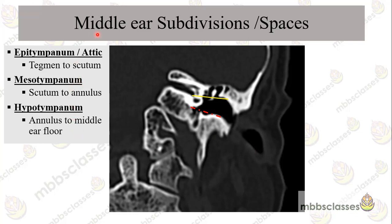In the coronal view, the middle ear spaces are divided into epitympanum, mesotympanum, and hypotympanum. For imaging, we pass a line through the inferior aspect of the scutum — this triangular projection is called the scutum. This is the tympanic segment of the facial nerve and this is the head of the malleus. A yellow line passes along the inferior margin of the scutum, and another line passes through the level of the annulus. The middle ear space superior to the yellow line is the epitympanum, the space between these two lines is the mesotympanum, and the inferior most is the hypotympanum.